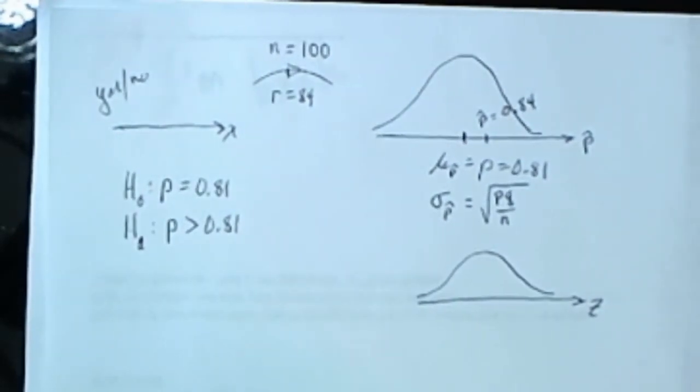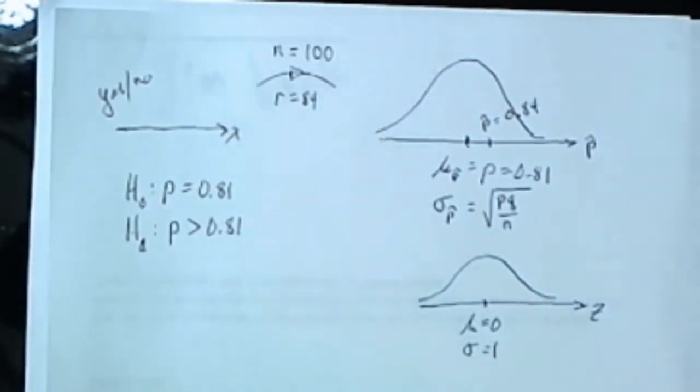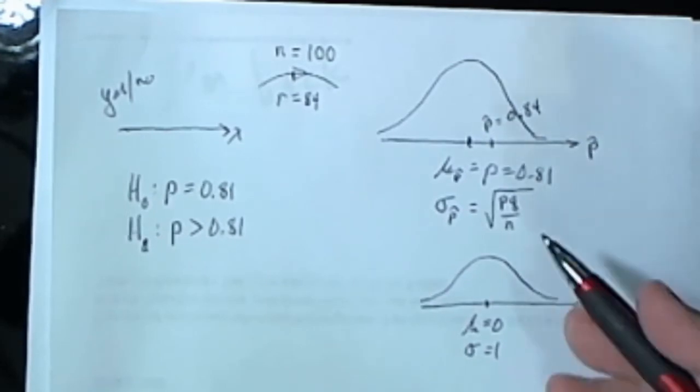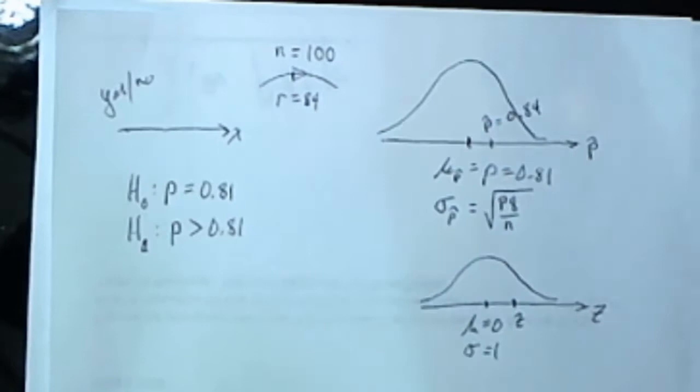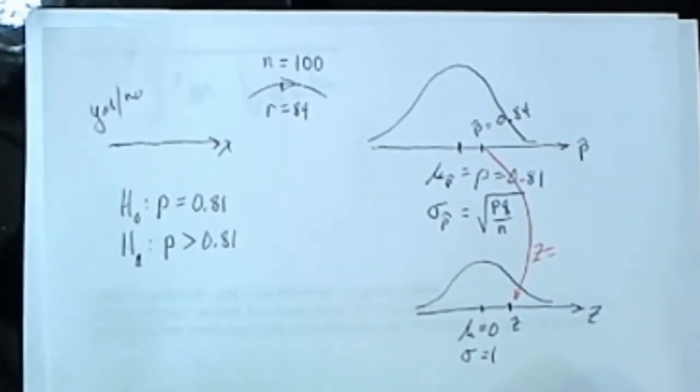The third distribution in the three distribution diagram for proportions is a standard normal distribution, where the mean is 0 and the standard deviation is 1. It translates this distribution to a standard normal distribution. So the mean gets transferred to 0, the standard deviation gets transferred to 1, and this value right here gets transferred to a z value.